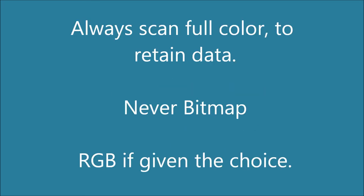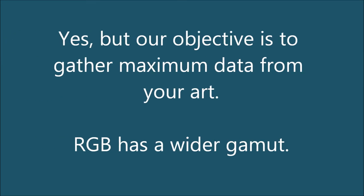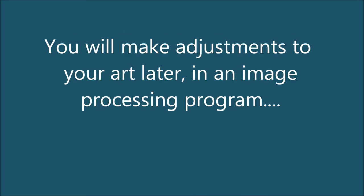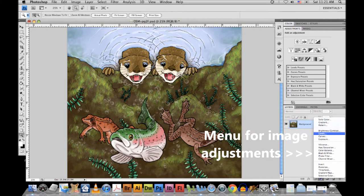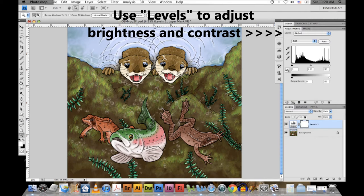Always scan full color, even if your art is black and white. Bitmaps are almost always a bad idea for art. If your scanner offers a choice between RGB and CMYK, scan in RGB. Wait — I gave a huge rant about never using RGB back in part one. Yes, you're right, I did. But scanning in as RGB is more likely to pick up more colors because RGB has a wider gamut or range. Your final product will be printed in CMYK, but don't eliminate colors from your art now. Your objective at the scanning stage is to retain as much data from the art as possible. You will adjust brightness and contrast, change file formats and color spaces later, but don't do it at this stage.